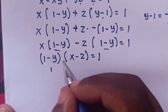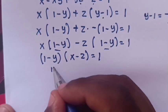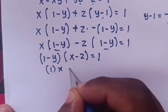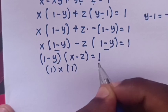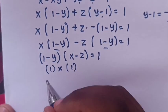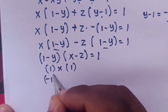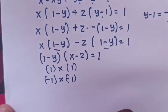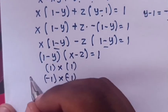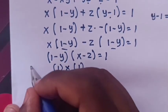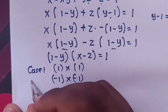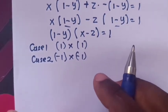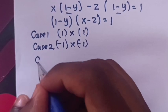To get a product of 1, we can have 1 × 1 = 1 or (-1) × (-1) = 1. So we have two cases: Case 1 and Case 2. We start to solve by Case 1.